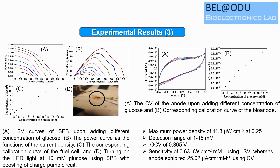Polarization data were recorded in PBS with different concentrations of glucose using linear sweep voltammetry. We determined power density from the curve and plotted it against glucose concentration for the fuel cell calibration curve. We also turned on an LED using 10 mM glucose solution with a charge pump booster. Cyclic voltammetry of the anode was also conducted for different glucose concentrations.